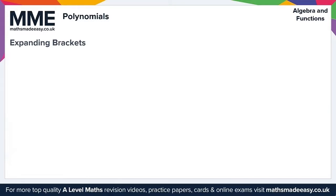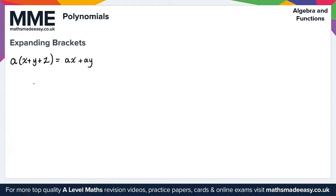We start with the case of single brackets. So let's say we've got a times (x plus y plus z). Here what we do is take the a on the outside and multiply it by each term inside the bracket. So the first term is a times x, giving us ax. Then we do a times y, giving us plus ay. And finally a times z, giving us plus az. That's what we get in the case of single brackets.